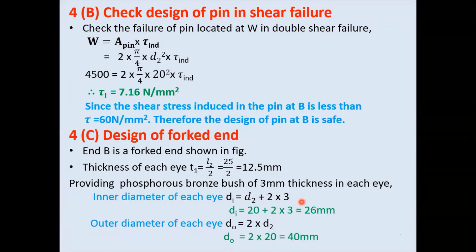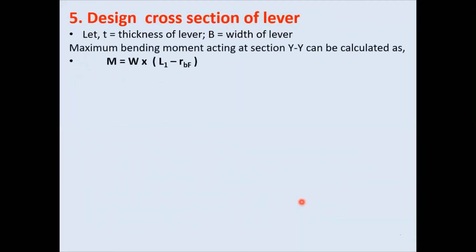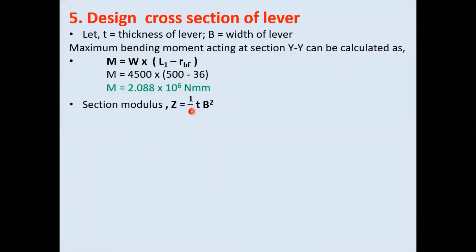The last step is design of the lever. The lever will be subjected to bending failure at section YY. The bending moment equation is M = W × (L1 − radius of boss at fulcrum). Substituting values, the bending moment = 2.088 × 10⁶ N·mm. The section modulus for section YY is Z = tb²/6.